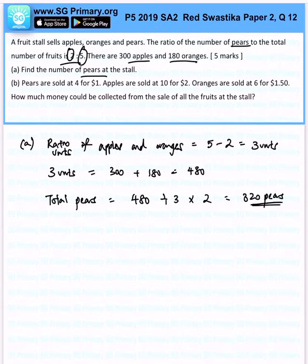That's for part A. Now let's take a look at part B. Pears are sold at 4 for $1, apples are sold for 10 for $2, oranges 6 for $1.50. How much money can be collected from the sales of these fruits?